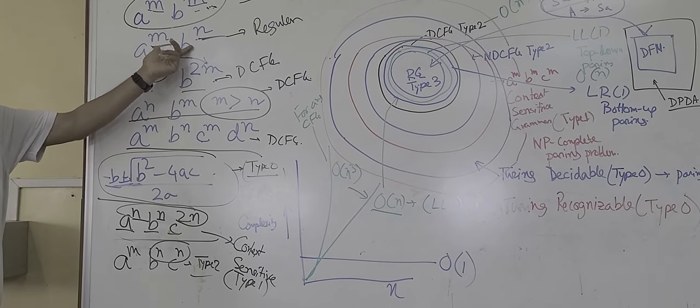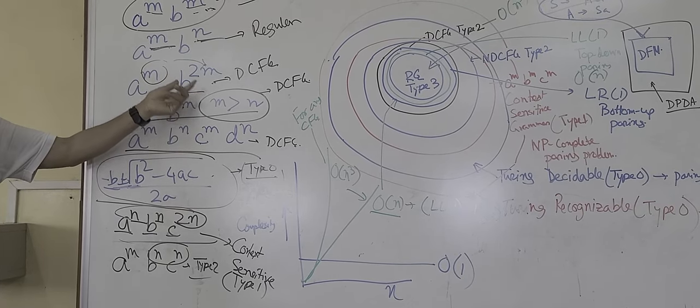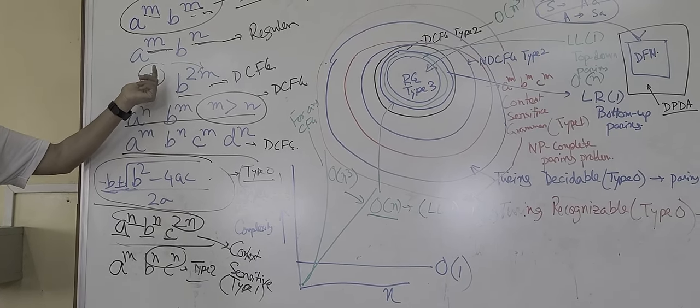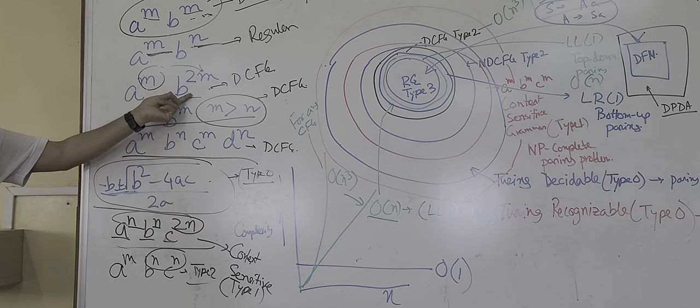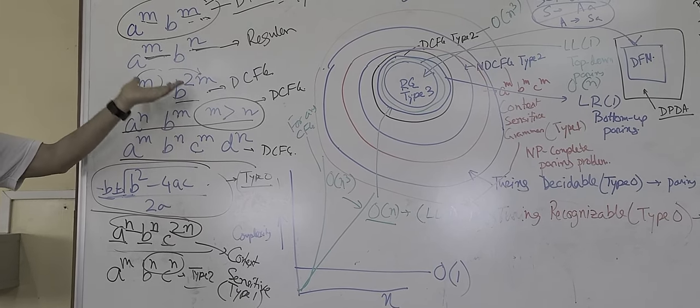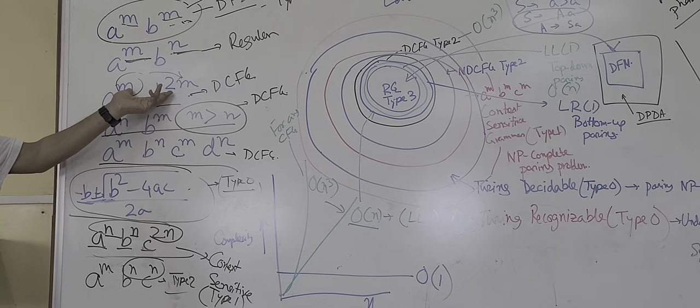No relation. A to the power A, B to the power 2A. So for each A, for 2B, I can pop one A. So this is again a deterministic pushdown automata.